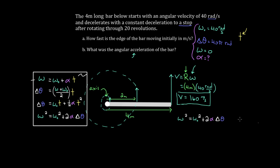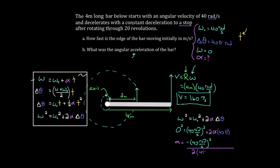Plugging in: omega-final squared is zero squared — that's zero — equals omega-initial squared, which is 40 squared, plus two times alpha times delta-theta, which is 40 pi. Solving algebraically for alpha: subtract 1600 from both sides, then divide by two times 40 pi. This gives alpha equals negative 6.37 radians per second squared. It's negative because the bar slowed down — the angular acceleration must have the opposite sign to the initial angular velocity.